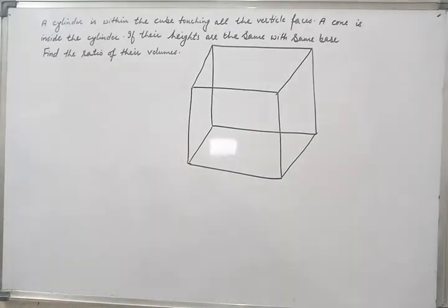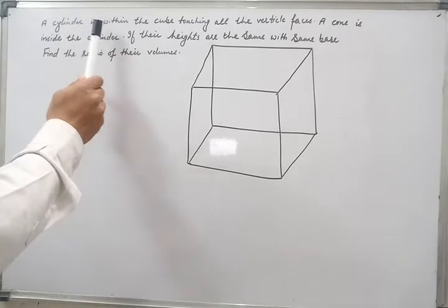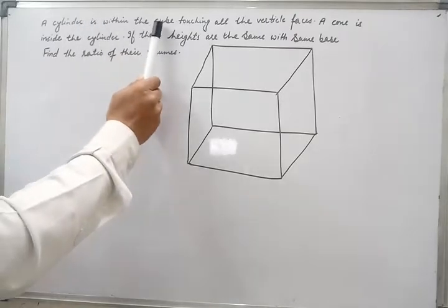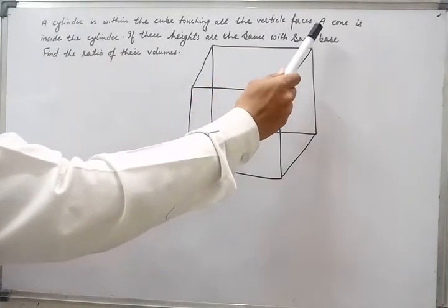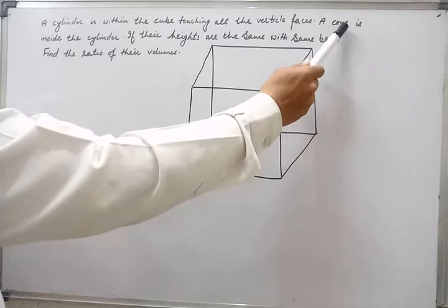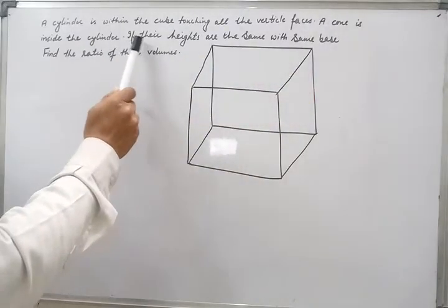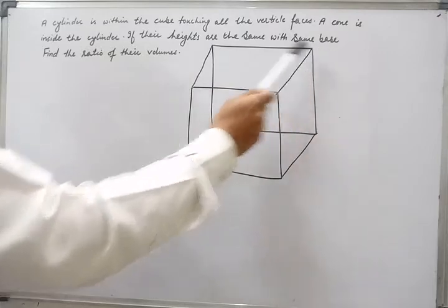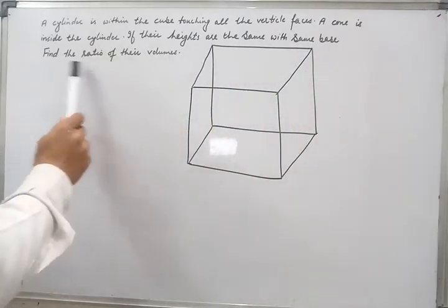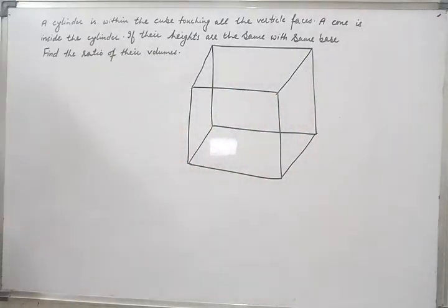Hello dear students, let's solve this question. A cylinder is within the cube touching all the vertical faces. A cone is inside the cylinder. If their heights are the same with the same base, find the ratio of their volumes.